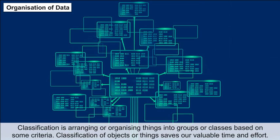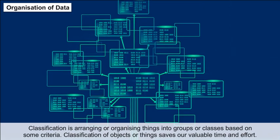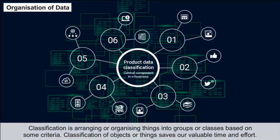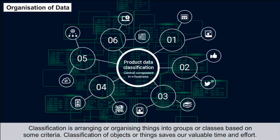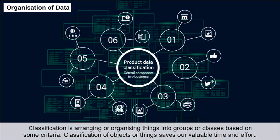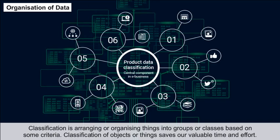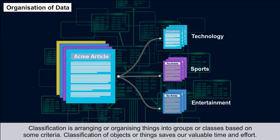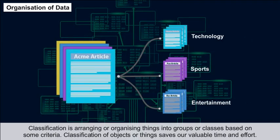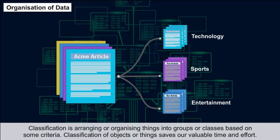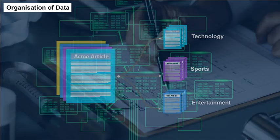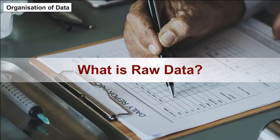Learn about different frequency distributions. Organization of data: Classification is arranging or organizing things into groups or classes based on some criteria. Classification of objects or things saves our valuable time and effort.